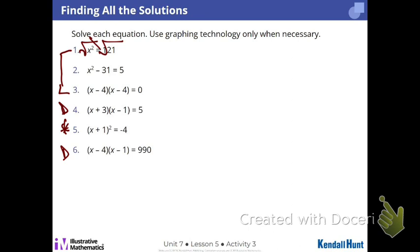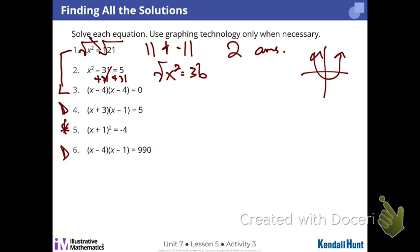For number one, it can be 11 and negative 11. So, two answers. Which means it's going to look like this. Problem two. I can add 31 to both sides. If X squared is 36, guess what? Six and negative six. Looking like that.